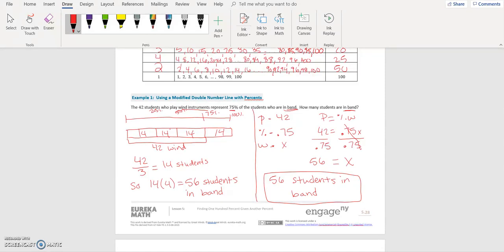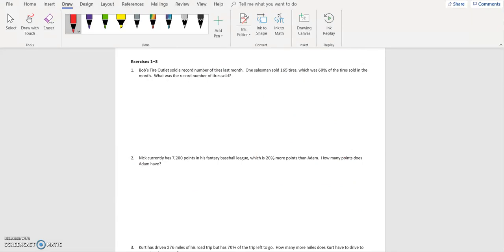Please pause your video and try exercise number 1 and play when you're ready. Exercise 1 is very much like example 1. Bob's Tire Outlet sold a record number of tires last month. One salesman sold 165 tires, which was 60% of the tires sold in the month. What was the record number of tires sold? So, splitting it in half.